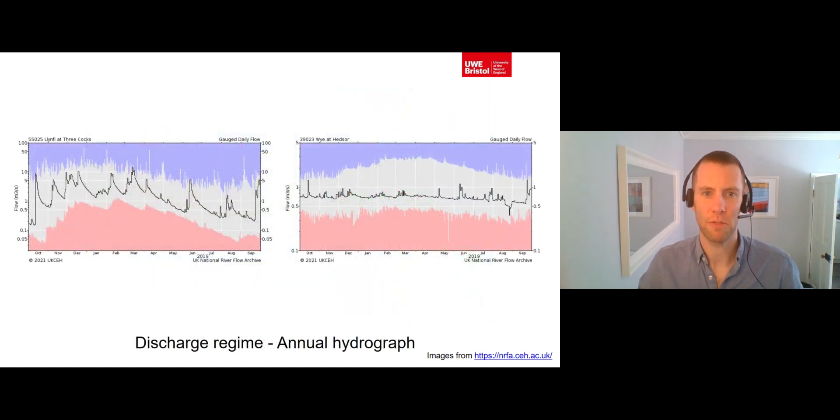The continuous measurement of discharge from flow gauges can be used to plot a river's discharge regime in the form of an annual hydrograph.